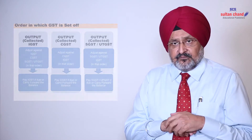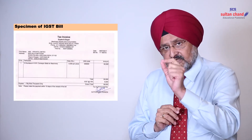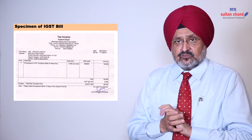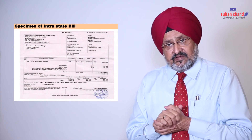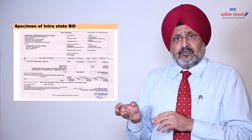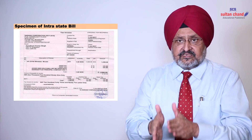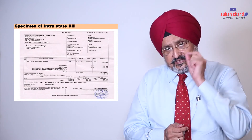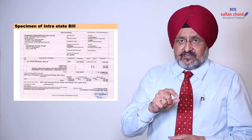Now, before you is the tax invoice. The seller is located in Delhi and the purchaser is located in Haryana. In this case, the seller has levied IGST, as this is an interstate transaction. In the second specimen, both the seller and purchaser are located in Delhi — that means it is an intrastate sale or intrastate supply. In this case, CGST and SGST will be levied. Since it is in Delhi, the state component is represented by DGST, that is Delhi GST.